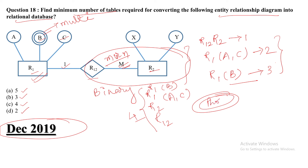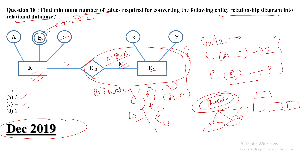Multi-valued attribute example: phone number is a multi-valued attribute because every person has two to three phone numbers nowadays. In one cell we cannot store all the values, so we create a different table to store the different values. Therefore the correct answer is option B, which is 3.